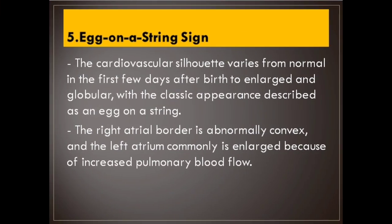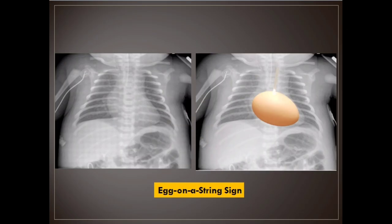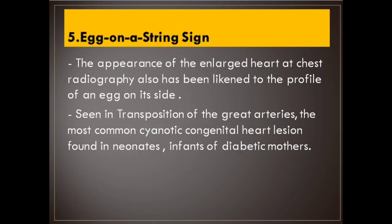Number 5: Egg on a string sign. The cardiovascular silhouette varies from normal in the first few days after birth to enlarged and globular, with the classic appearance described as an egg on a string. The right atrial border is abnormally convex, and the left atrium is commonly enlarged because of increased pulmonary blood flow. It is seen in transposition of the great arteries, the most common cyanotic congenital heart lesion found in neonates, and in infants of diabetic mothers.